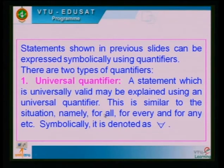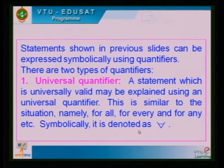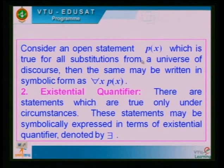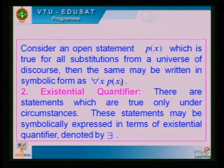Statements shown in previous slides can be expressed symbolically using quantifiers. There are two types of quantifiers. The first is the universal quantifier — a statement which is universally valid may be expressed using a universal quantifier. This is similar to the situation of 'for all', 'for every', and 'for any'. Symbolically it can be denoted by ∀ (for all or for every). If an open statement P(x) is true for all substitutions from a universe of discourse, then the same may be written symbolically as ∀x P(x). This means it is true in all situations.